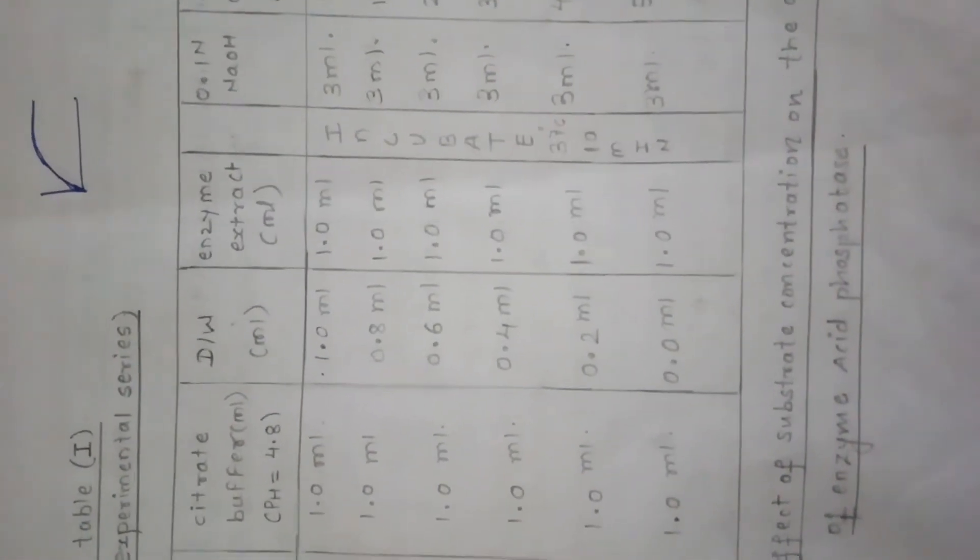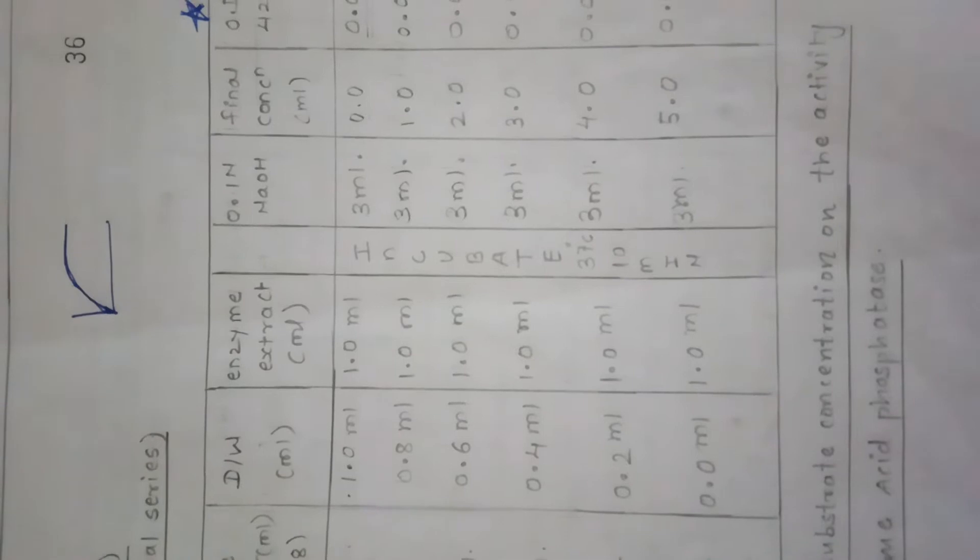Then 1 ml of enzyme extract is added to each tube. The tubes are incubated for 10 minutes at room temperature or at 37°C. After incubation, 3 ml of 0.1 N NaOH is added to stop the reaction. The final concentration is expressed in millimolar, and OD (optical density/absorbance) is measured using a colorimeter at 420 nanometer wavelength.